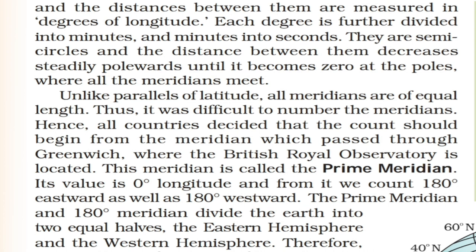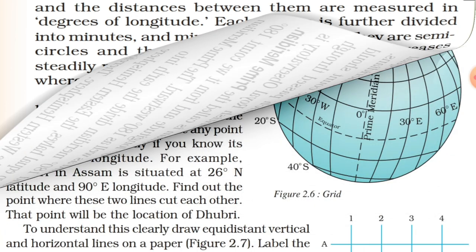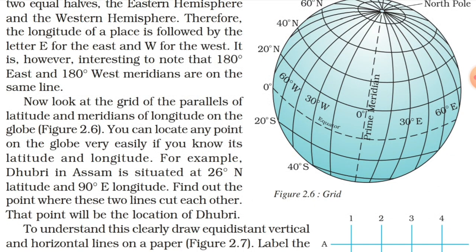The Prime Meridian and the 180-degree meridian divide the Earth into two equal halves — the Eastern Hemisphere and the Western Hemisphere. The longitude of a place is followed by the letter E for East and W for West. It is interesting to note that 180 degrees East and 180 degrees West meridians are on the same line.